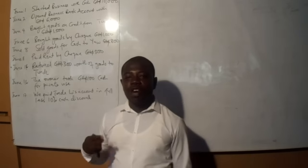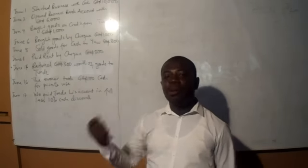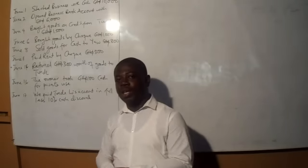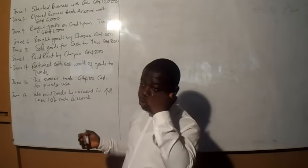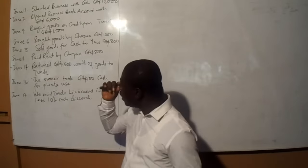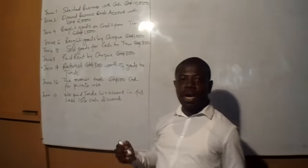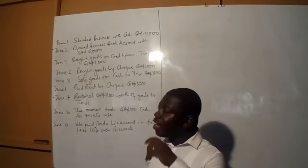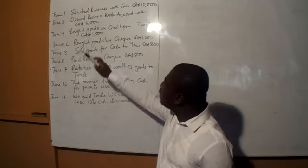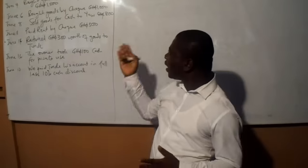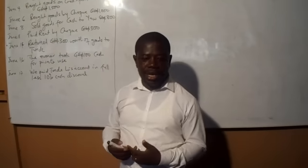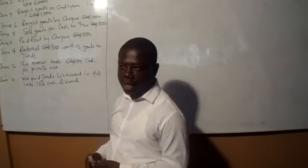The next thing is to find out whether we are going to debit which account and credit which account, since every debit entry has a corresponding credit entry. Looking at the first transaction: started business with cash of 10,000. What are the two accounts involved? Obviously there is cash, and whenever you see 'started business,' the only thing that should come to mind is capital. So the two accounts involved here are capital account and cash account.